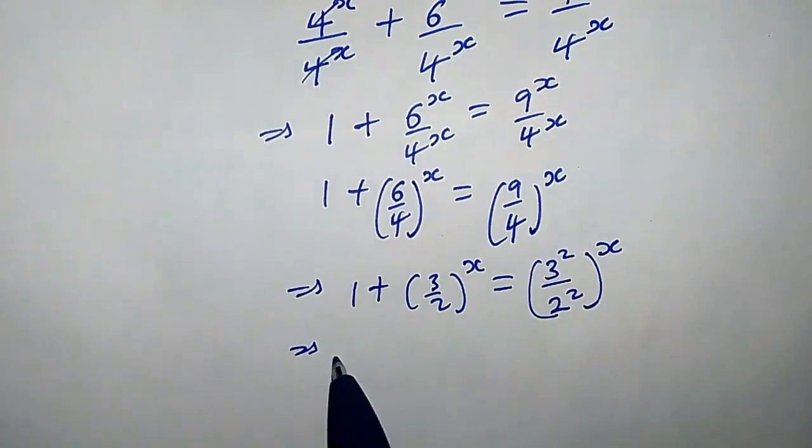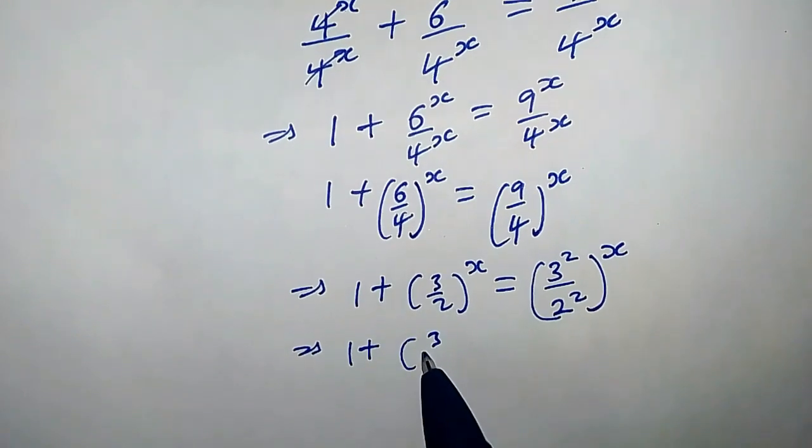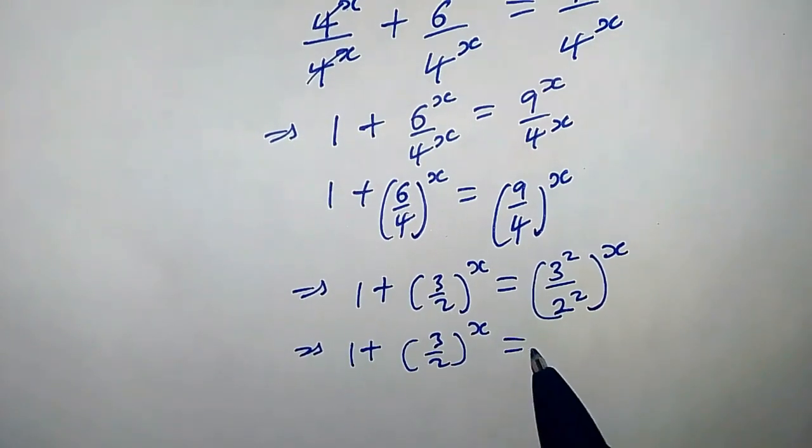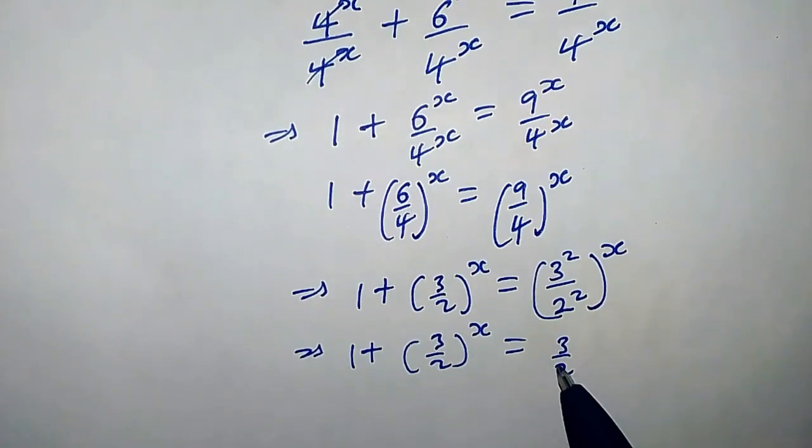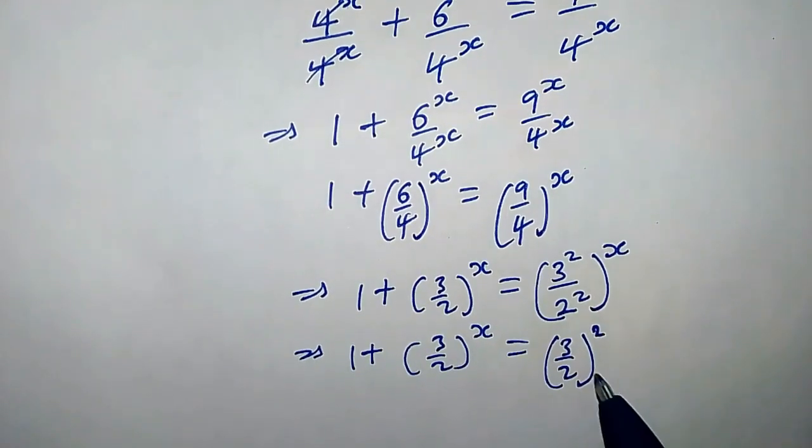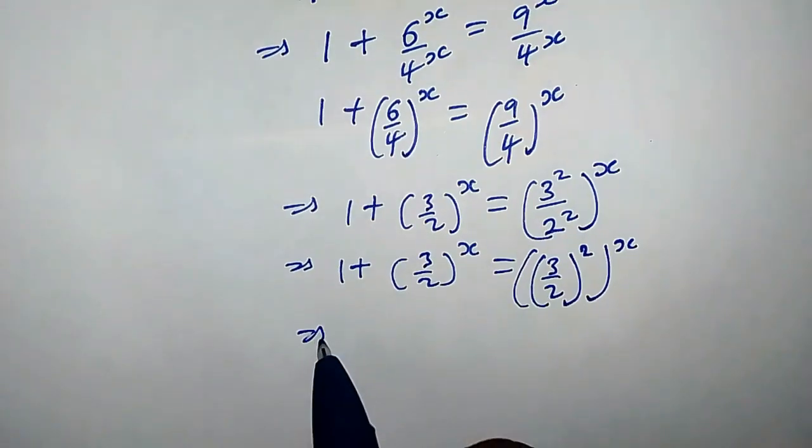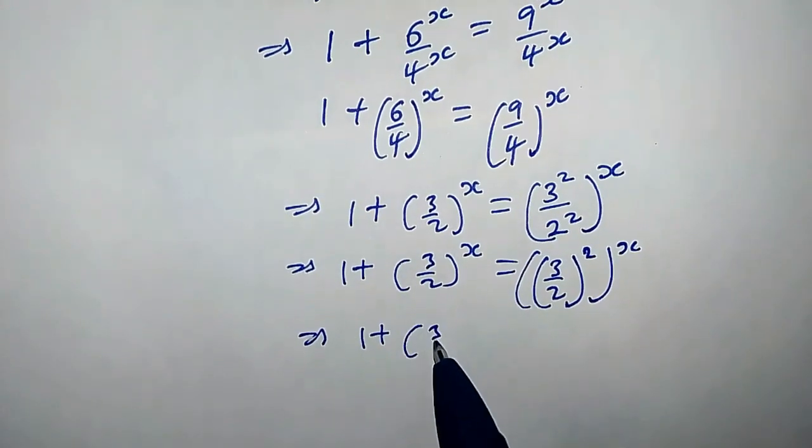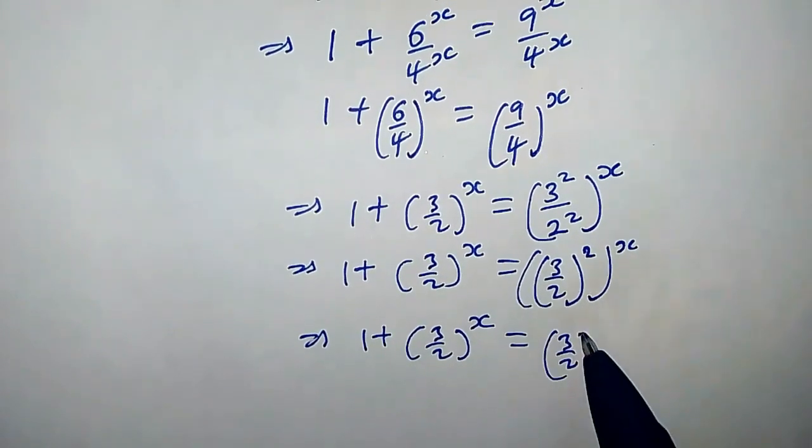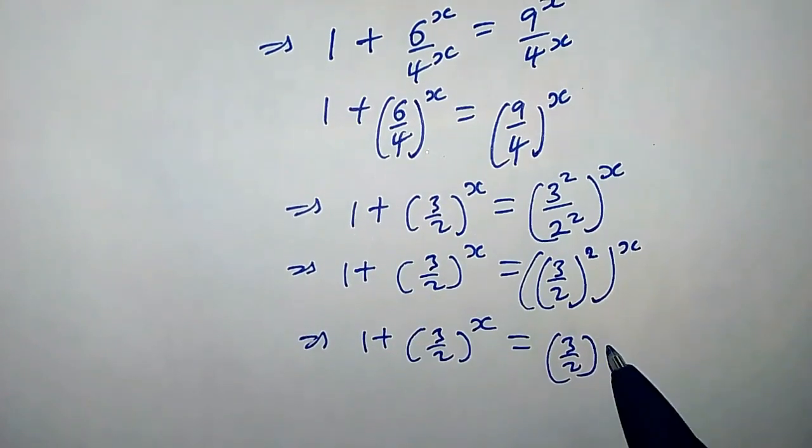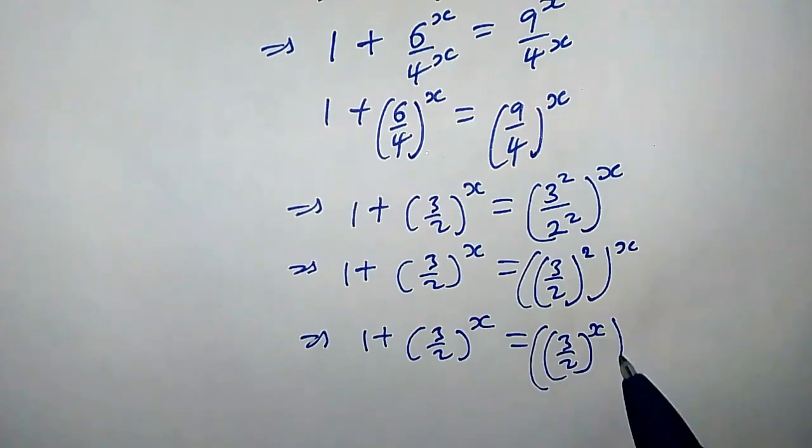So we have raised to x. This implies that 1 plus (3/2)^x equals, we can pull out this power 2 because it is common, so we have (3/2)^(2x). This implies that 1 plus (3/2)^x equals (3/2)^(2x). Let's switch this power, so we have x times 2.